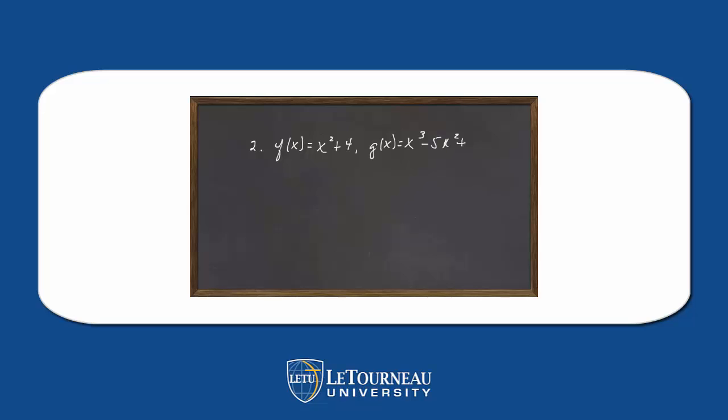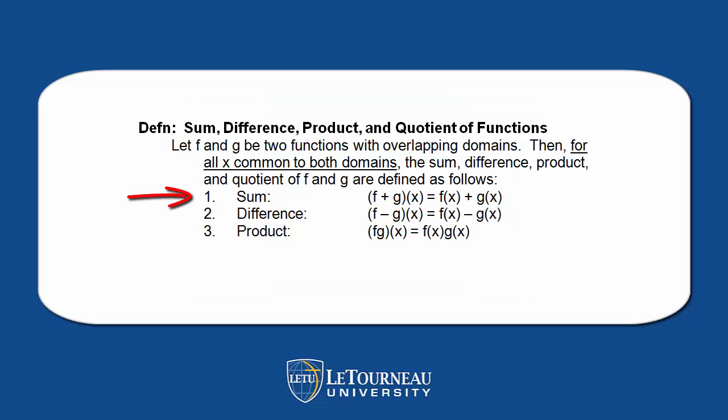Now, let's say we subtract two functions of this type. I'm getting adventuresome. Notice the length. x squared plus 4 minus x cubed minus 5x squared, 6x minus 7. x squared plus 4, be careful of your signs, plus 5x squared minus 6x plus 7. Here we go. Minus x cubed plus 6x squared minus 6x plus 11.